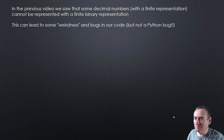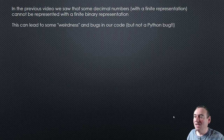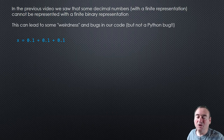Now this is not a Python bug. It's just simply a result of how numbers are being stored using binary representations of real numbers — floats. It's not a bug in Python; it will be the same in other languages as well. But it could be a bug in our code if we don't know how to deal with it and how to work with it.